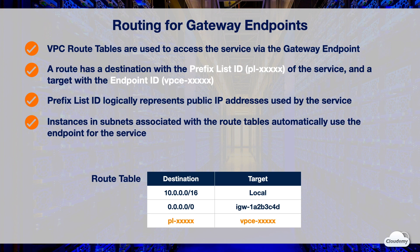All instances in subnets associated with the specified route tables automatically use the endpoint to access the service. Subnets not associated with the specified route tables don't use the endpoint — this enables you to keep resources in other subnets separate from your endpoint. You can have multiple endpoint routes to different services in a route table, and multiple endpoint routes to the same service in different route tables, but you cannot have multiple endpoint routes to the same service in a single route table.